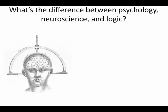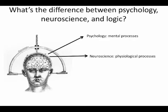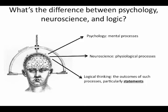Let's distinguish logical thinking from some other disciplines that are concerned with the mind, specifically psychology and neuroscience. Psychologists are interested in mental processes. Neuroscientists are interested in the chemistry of the brain, which manifests itself in physiological processes. But logicians are interested in the outcomes of these processes, namely our beliefs, insofar as these are expressed in statements.